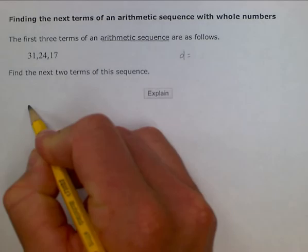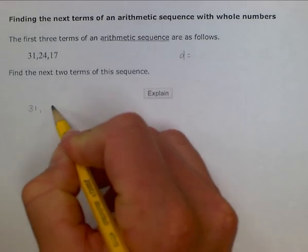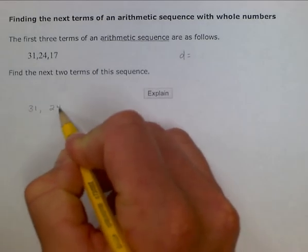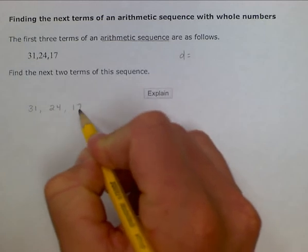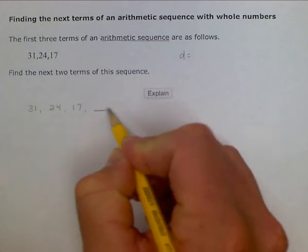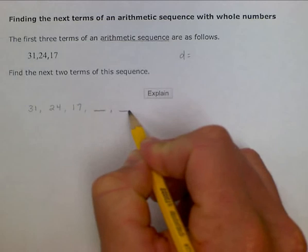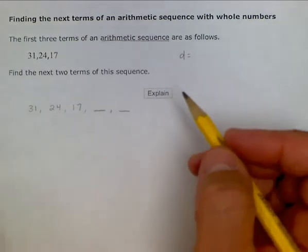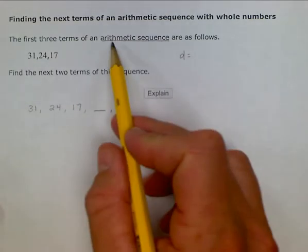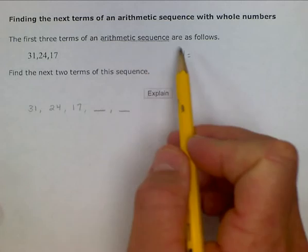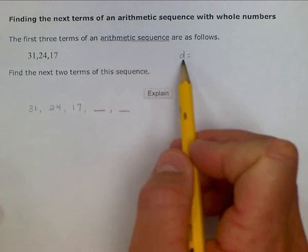So we have 31, and then it goes to 24, and then to 17, and then we're looking for the next two terms. Well, if we remember, in terms of working with an arithmetic sequence, we know there's a common difference, d, and in order to find that...